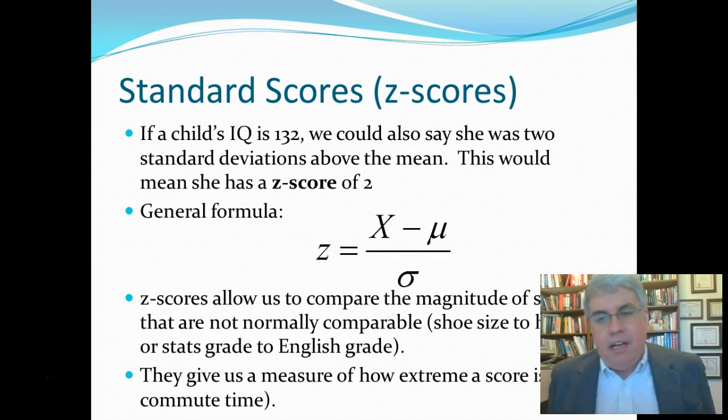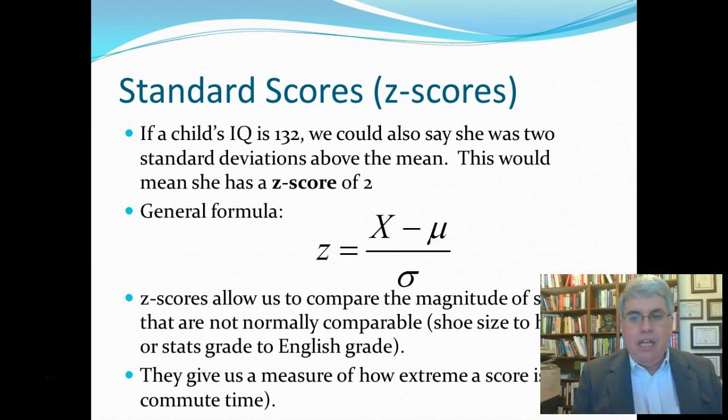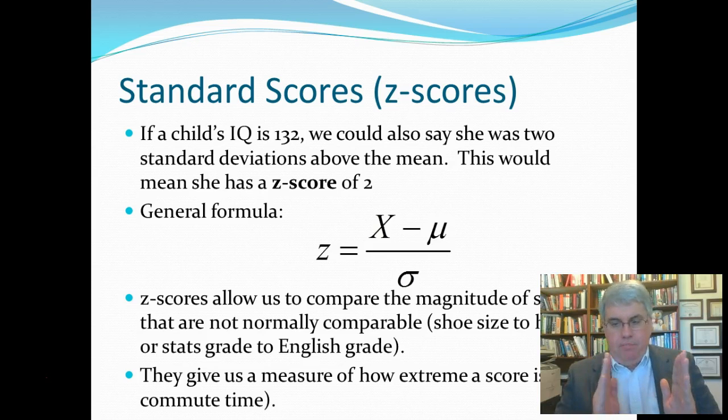Now, let's talk about what's known as standard scores. If the child's IQ was 132, we could also say that she was two standard deviations above the mean. That makes sense, because one standard deviation is 16. 16 times 2 is 32, so 132 is 32, two standard deviations above the mean. We would say that this means she has a Z-score of 2.